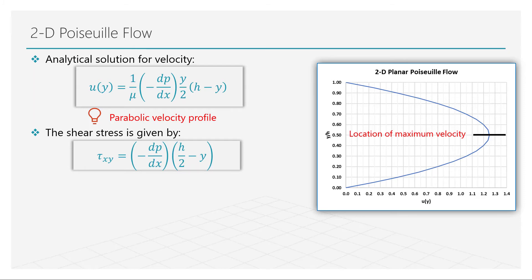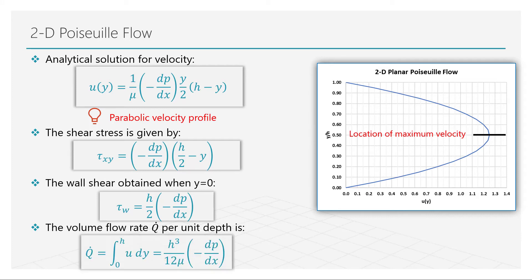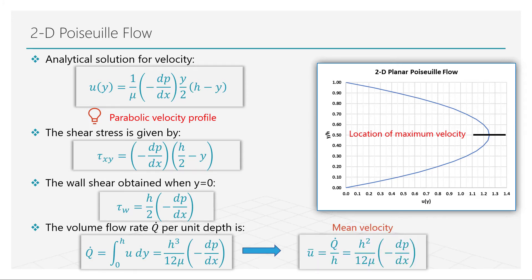Substituting y equal to zero in the equation gives the shear stress at the surface of the plate, also known as the wall shear stress. The volume flow rate — the amount of fluid passing through between the two plates — is obtained by integrating the velocity field. Based on that, we can obtain a value for the mean velocity, which is the volume flow rate divided by the width of the channel.